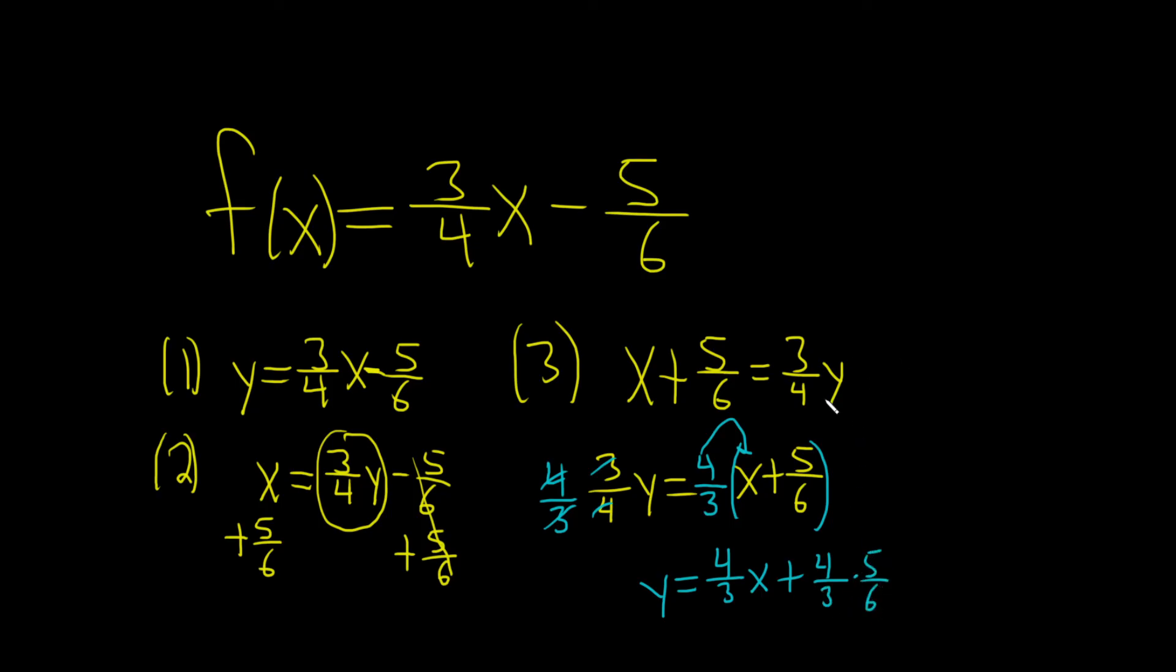Some simplification should take place here. 2 goes into 4 twice and it goes into 6 three times. So this is y equals 4 thirds x. See 2 times 5 is 10, and on the bottom here we get 9.